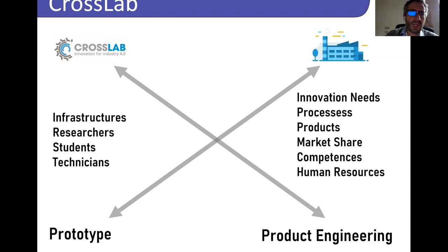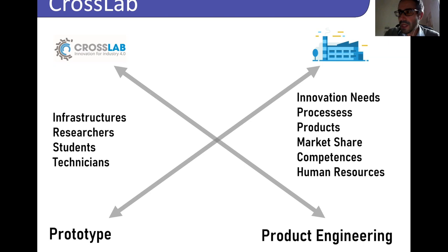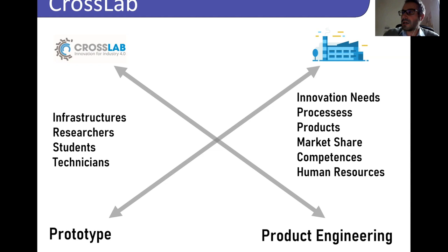The paradigm for interaction with industries is simple. Our CrossLabs provide the infrastructure, knowledge, experience, students, researchers, and technicians, available for industries for their development purposes. An industry can come to us with an idea but lacking expertise or infrastructure, and start working with us to build a prototype. After the initial prototyping phase, the prototype can pass to the industry, which can complete the product engineering with our ongoing help.